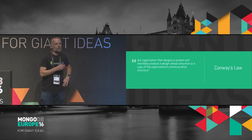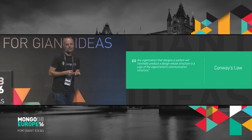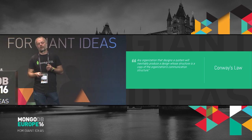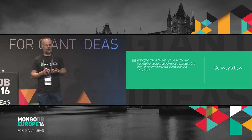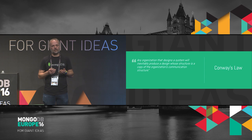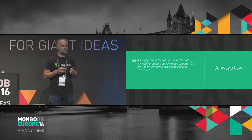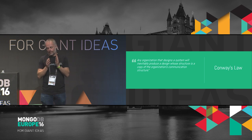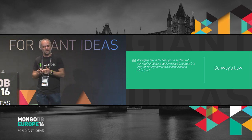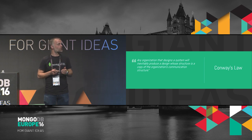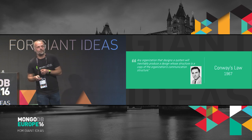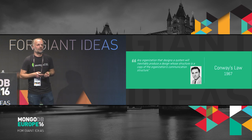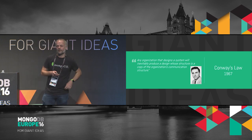Thinking about organization: one of the fundamental laws of microservices states that any organization that designs a system will inevitably produce a design whose structure is a copy of the organization's communication structure. The converse is that if your architecture doesn't reflect your organization or the communication between those teams doesn't work as designed, you're going to have a poor product. Interestingly, this law was written in 1967 — it's amazing how things with real truth behind them last through the years.